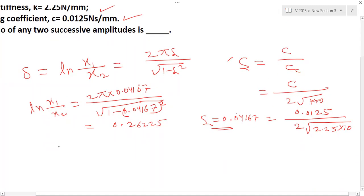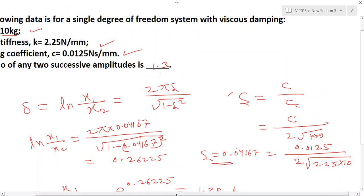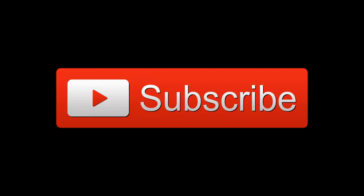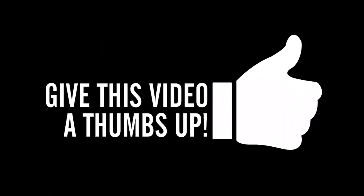Now we have to find x₁/x₂, which is the ratio of amplitude. This equals e^0.04167, which gives us approximately 1.3. This is the right answer for our two successive amplitude ratio.